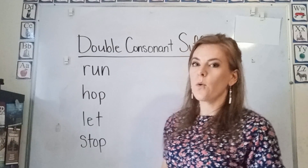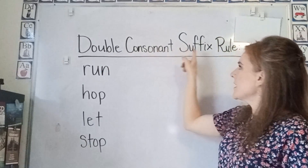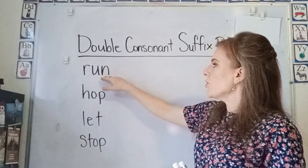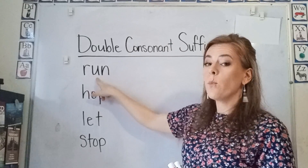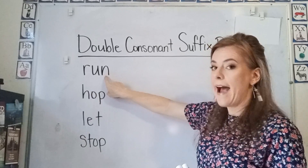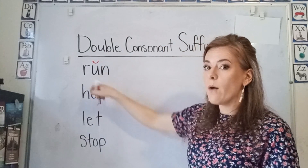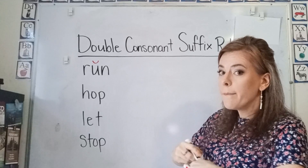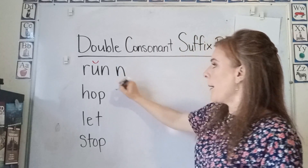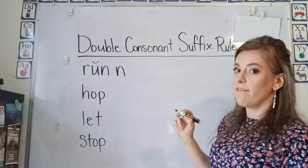Hello students, today we're going to go over another rule, our double consonant suffix rule. So here we have the word run. When you're going to add a suffix to a word that has one consonant at the end, and it has a short vowel, you double the consonant before adding your suffix that has a vowel sound.